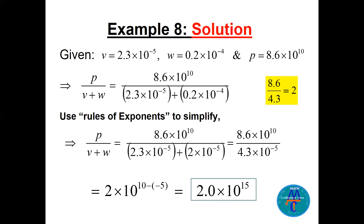Let's see how we get 2.0 times 10 to the power 15. P is 8.6 times 10 to the 10. To add V and W, you need the same power — make both 10 to the minus 5, adjusting one value to get 2.0 times 10 to the minus 5. Adding 2 and 2.3 gives 4.3 times 10 to the minus 5. Then 8.6 divided by 4.3 equals 2, and the exponent is 10 minus (minus 5) equals 15, giving 2.0 times 10 to the power 15.